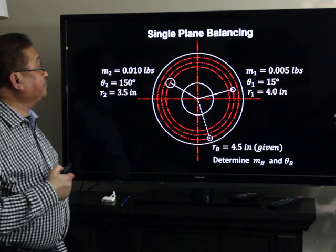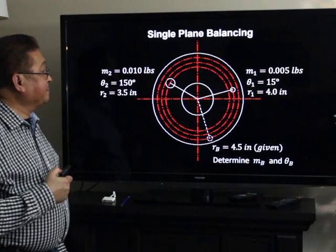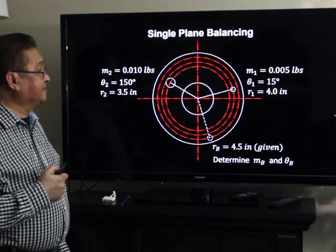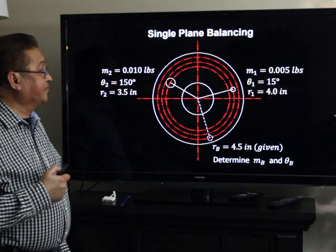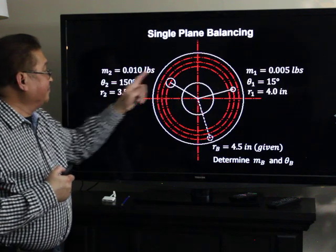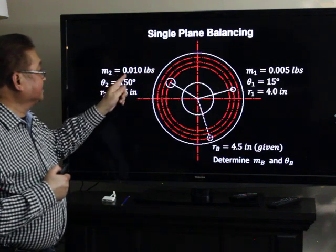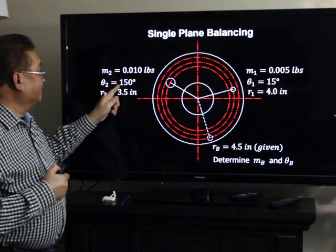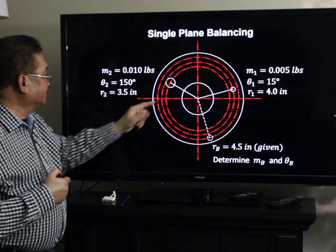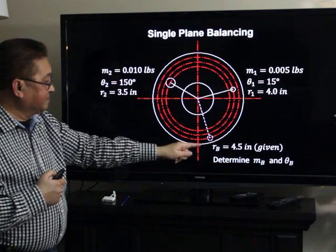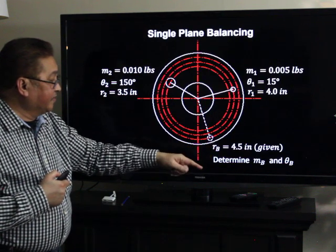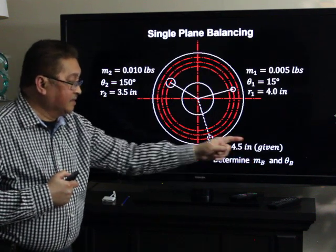Here is an example of single-plane balancing. Given: unbalanced mass M sub 1 is 0.005 pounds at theta sub 1 equal to 15 degrees and R sub 1 equal to 4 inches. The second unbalanced mass M sub 2 is 0.01 pounds at 150 degrees and radius 3.5 inches. For the counterbalance, the radius R sub B is given as 4.5 inches. We need to determine M sub B and theta sub B.